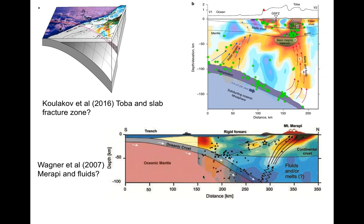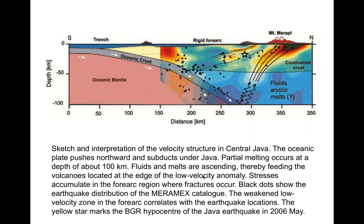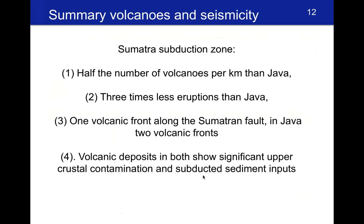There are also more detailed geophysical studies, for example imaging what's going on below Toba volcano. A recent paper images melts and fluids in the slab, possibly related to a change in slab dip — perhaps a breaking of the slab — linked to the Toba eruption. There are also a few detailed studies on very active volcanoes like Merapi, proposing that fluids from the slab travel diagonally toward Merapi, likely explaining its high activity.